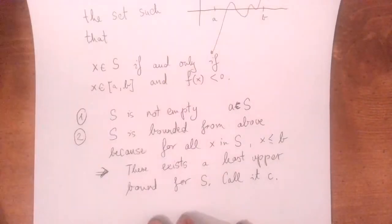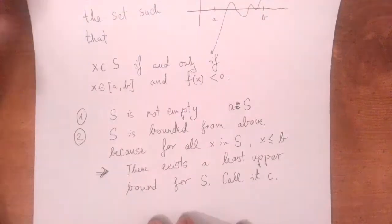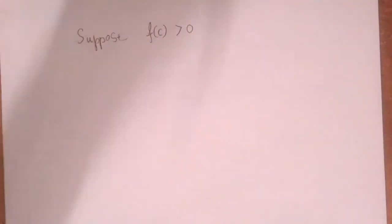Now we're going to prove that f of c cannot be positive or negative, because in both cases c could not be the least upper bound. The fact that c is the least upper bound will imply that the function has to take a zero there.